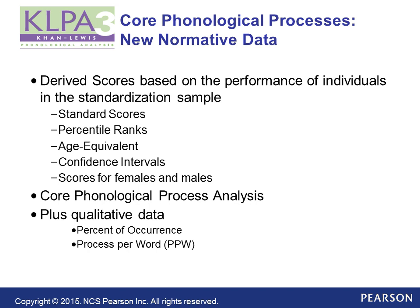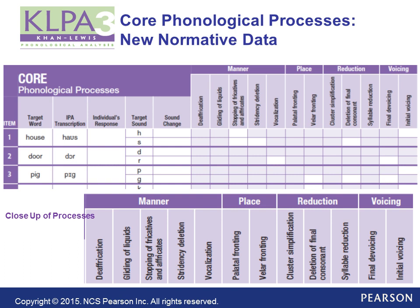Here is a snapshot of the core phonological processes in the KLPA3. You can see that the processes are also categorized into the type of error they are: manner errors, place errors, reduction errors, and voicing errors. We have the target word spelled orthographically, the IPA transcription, a cell for the individual transcript response, and then the target sounds and the sound changes. You can then mark the cell that corresponds to the phonological processes involved in those sound changes.